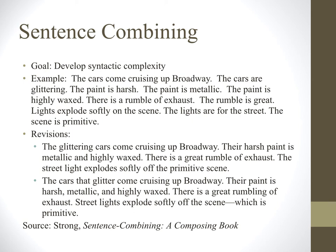If we ask students to combine some of the sentences, they might come up with something like this: The glittering cars come cruising up Broadway. Their harsh paint is metallic and highly waxed. There is a great rumble of exhaust. The street light explodes softly off the primitive scene. Or: The cars that glitter come cruising up Broadway. Their paint is harsh, metallic, and highly waxed. There is a great rumbling of exhaust. Street lights explode softly off the scene, which is primitive. In fact, there are infinite ways to combine these sentences. Notice that the revised sentences convey the same meaning but in more syntactically interesting ways, which makes them more readable.